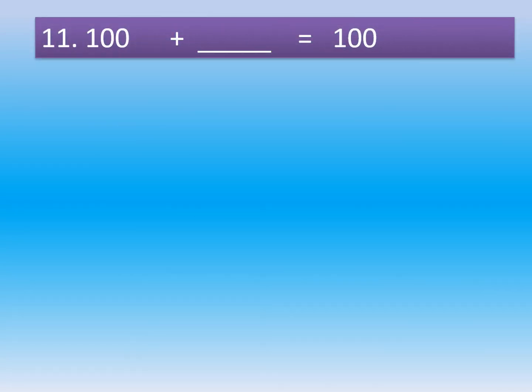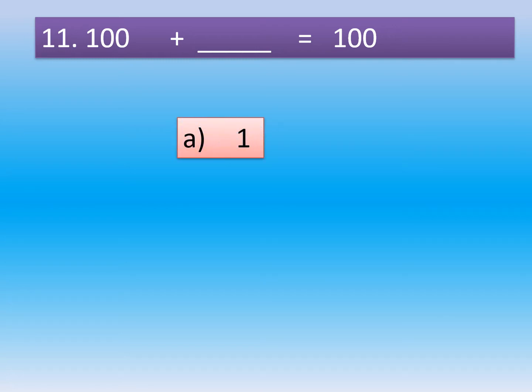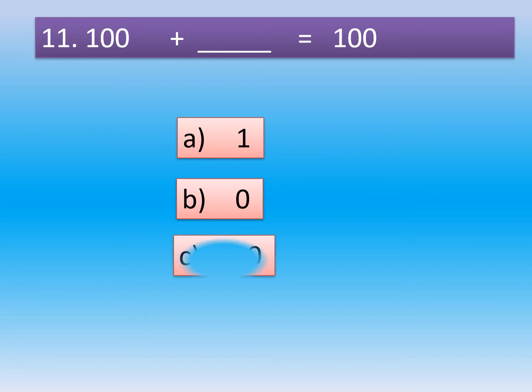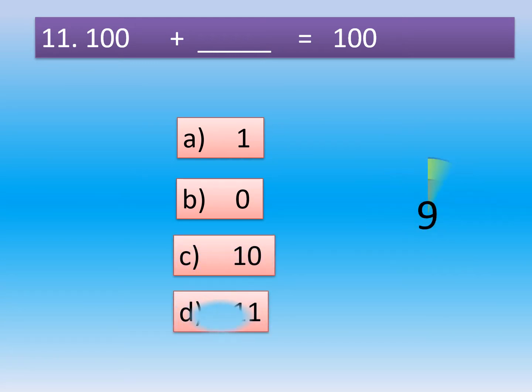Question number 11. 100 plus dash is equal to 100. Option A: 1. Option B: 0. Option C: 10. Option D: 11.